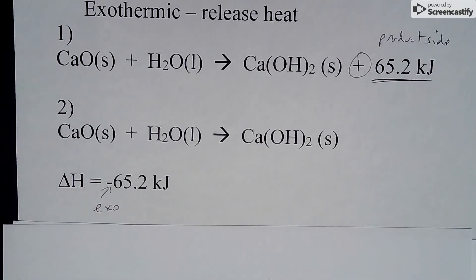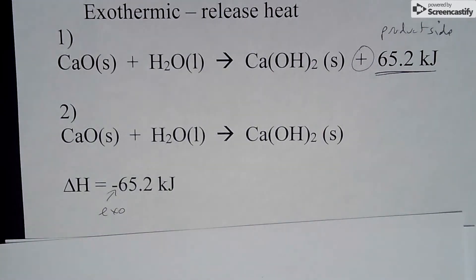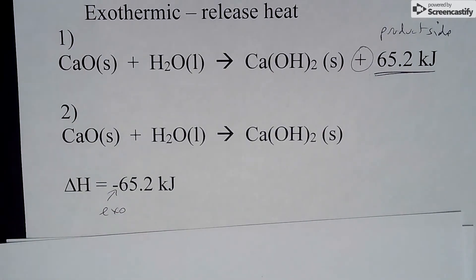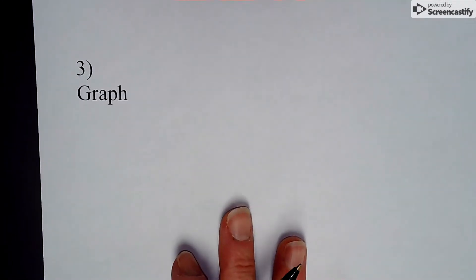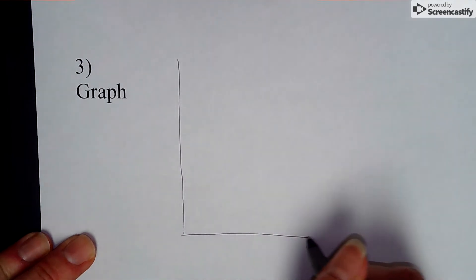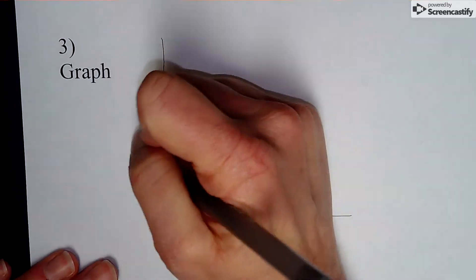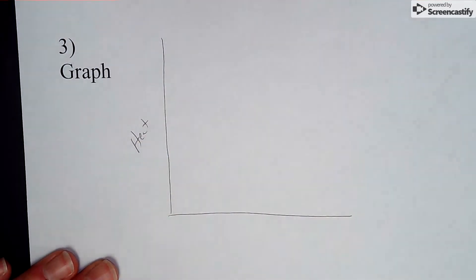The third way we're going to see an exothermic reaction is with a graph. We're going to draw a very simple graph here of this chemical reaction, and this graph is going to have heat on the y-axis.